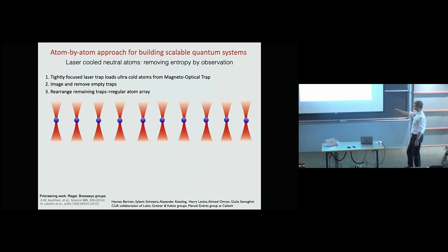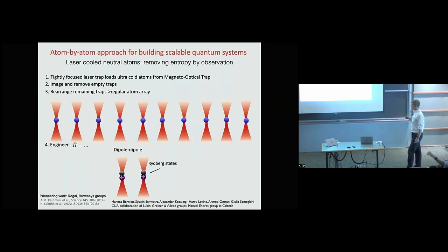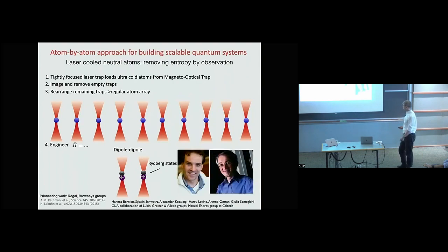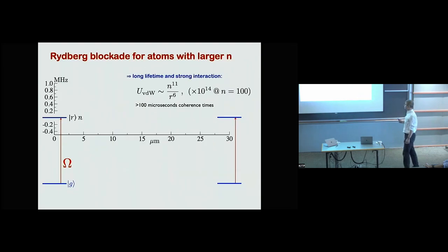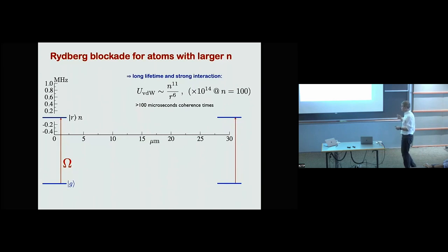With this approach we create arrays of atoms typically spaced by a couple of micrometers. At this point the atoms don't tunnel, they don't interact — the system is completely classical. To engineer interactions, we excite them into states with large principal quantum number, the so-called Rydberg states. We like Rydberg interactions because they have long lifetime and strong interactions. For n=100, the van der Waals interaction is 14 orders of magnitude stronger than between ground-state atoms.